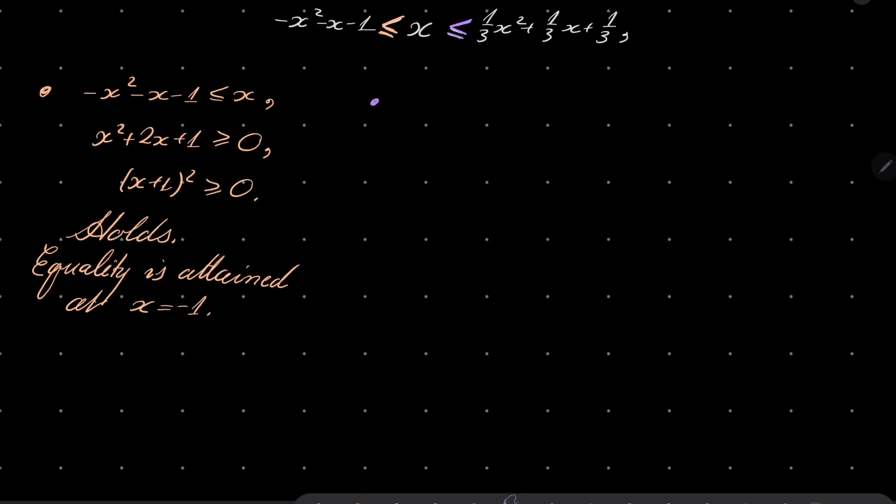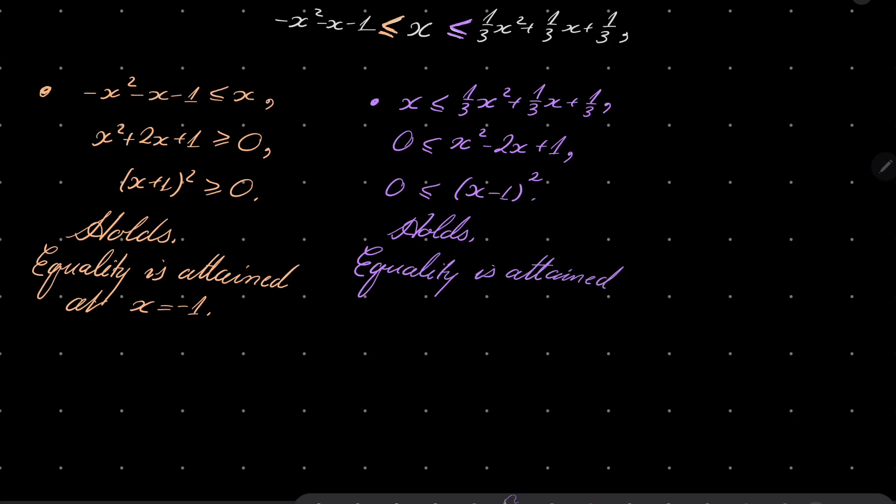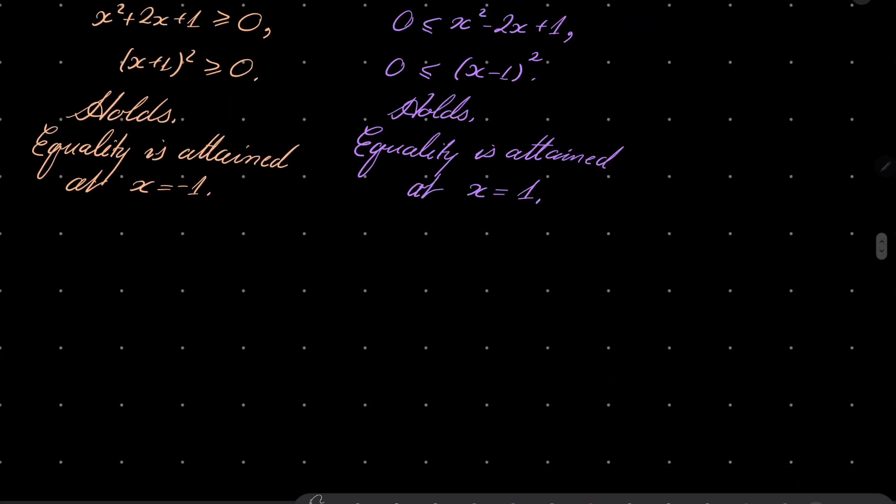All right, what about the second inequality? x less than 1 third x squared plus 1 third x plus 1 third. We can multiply by 3, we can put everything on the right hand side and it's equivalent to saying that this is true, which in turn means that x minus 1 squared is greater than or equal 0 which also holds. Equality is attained only at x equals 1.